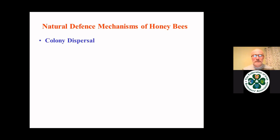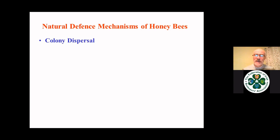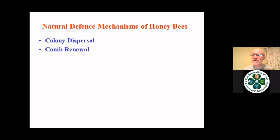One of the main things is colony dispersal. Tom Seeley in New York State has done a lot of work on the defense mechanisms that wild, unmanaged colonies have. In a natural environment like a forest, colonies will disperse themselves — I think the distance might be around a kilometer. This obviously avoids drifting, whereas humans keep colonies in an apiary quite close together, and in some countries they're traditionally very close together. This promotes drifting and robbing, which helps spread disease.